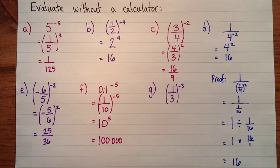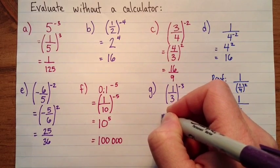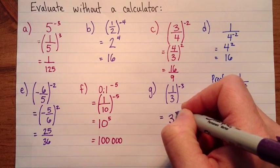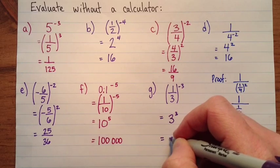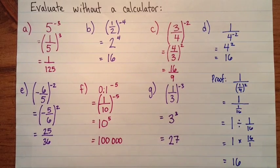Alright, and one last one here. One third to the exponent negative 3. So we'll take the reciprocal of the base, which is just 3, and that makes the exponent positive. And 3 cubed, 3 times 3 times 3 is 27. Okay, good luck.